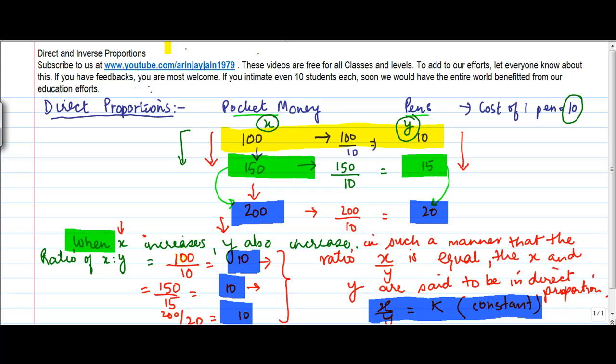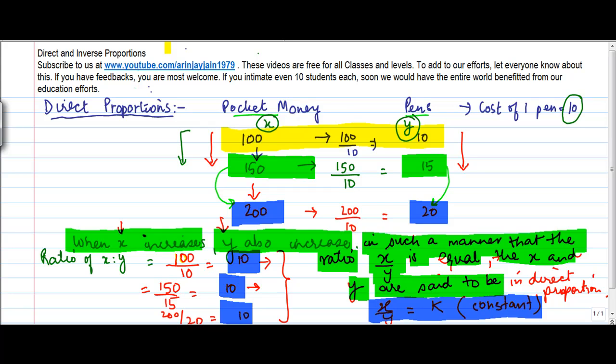So, when X increases, Y also increases in such a manner that the ratio X upon Y is equal, then X and Y are said to be in direct proportion. So, we say that X upon Y is equal to K, which is a directly proportional case.